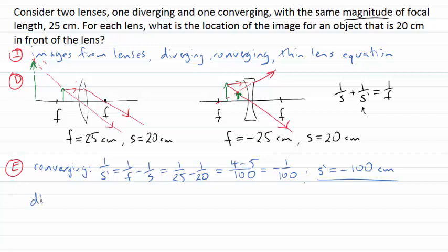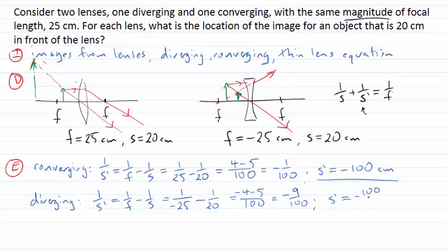Let's do a similar calculation now for our diverging lens. I've got the same expression here, 1 over S prime here will equal 1 over F minus 1 over S. Now my focal length is negative, so I've got to keep that in mind. 1 over minus 25 minus 1 over 20. I can again use a common denominator there of 100. But now I've got minus 4 minus 5, which we'll call minus 9 over 100. So in this case, my image distance here will be minus 100 divided by 9, which is approximately minus 11.1, again in units of centimeters.